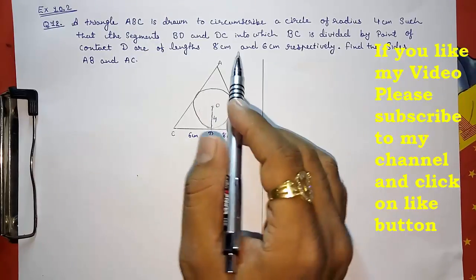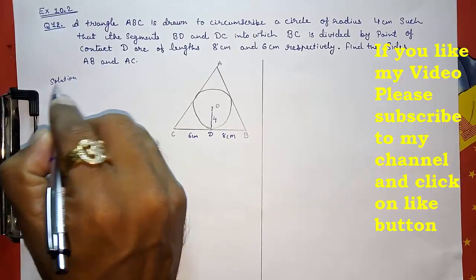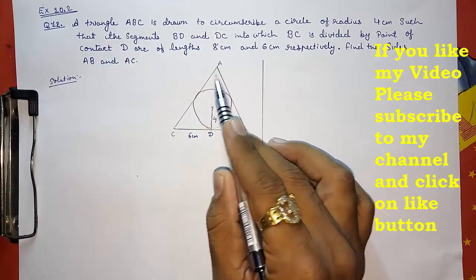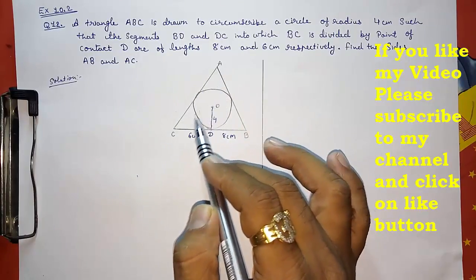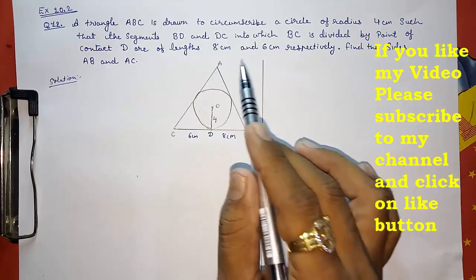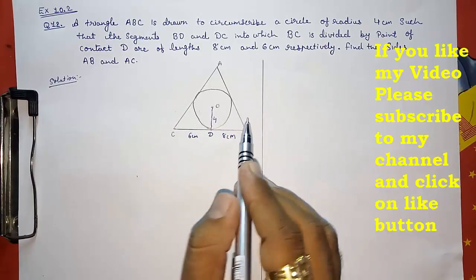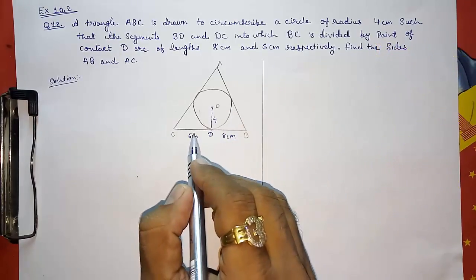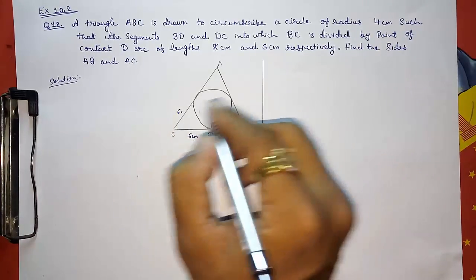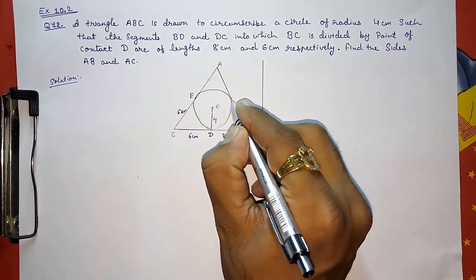So for that, first I am going to find the solution. Here in this sum we are first going to find the area of this triangle by simple half into base into height method. Then we are going to find the area of this triangle by Heron's formula. So now let us start. For that, first I have to write this is 6 cm, so this will also be 6 cm. Give this point name E and this point name F.